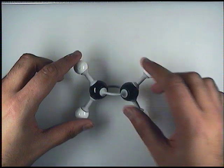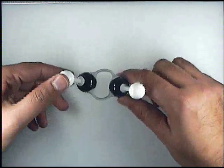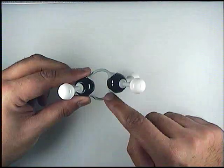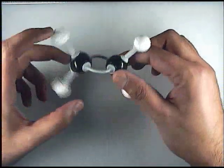Alkenes such as ethene have double covalent bonds between the carbons and single bonds between the hydrogens.